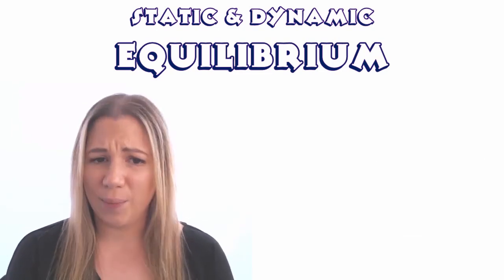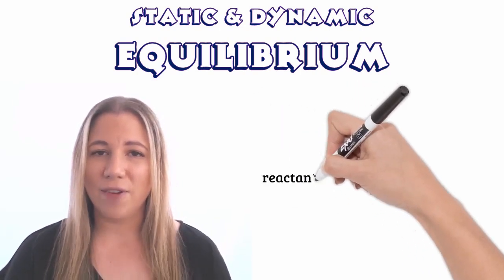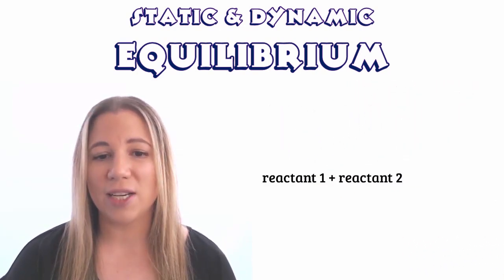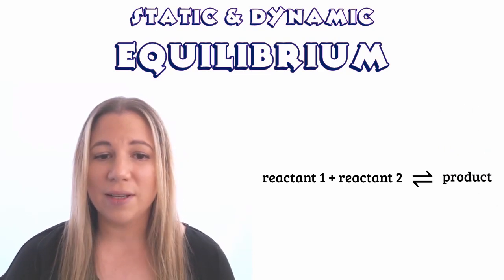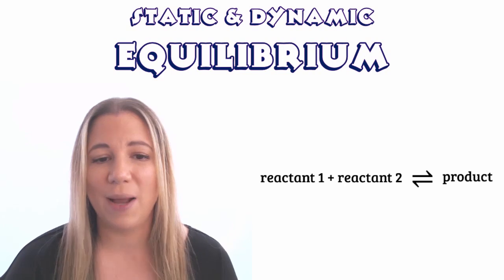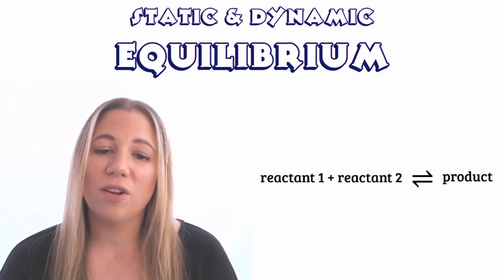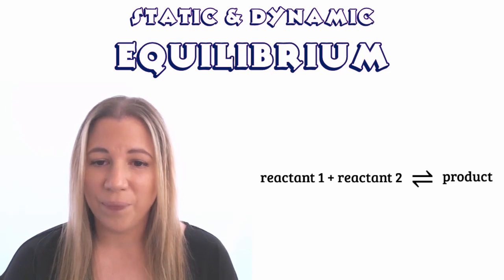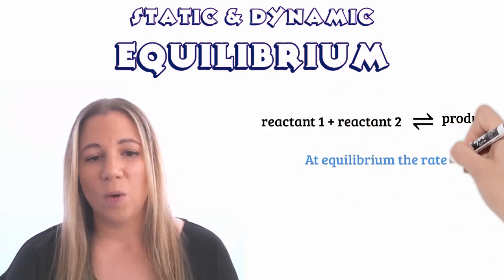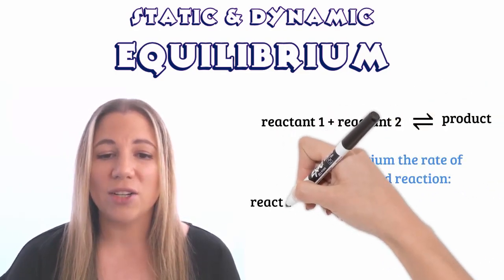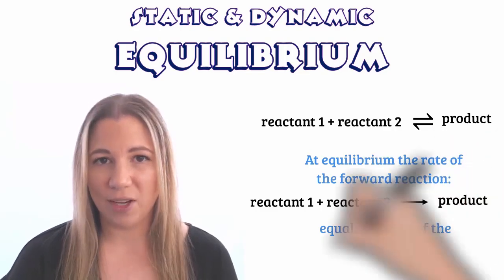So what is an equilibrium? Consider the following reaction. At first, the rate of the forward reaction is going to take place a lot faster than the reverse reaction, because at the beginning of the reaction, there are more reactant particles than there are product particles. Once a particular concentration of the products is reached, however, the reverse reaction will start to take place. Once the rate of the forward reaction equals the rate of the reverse reaction, we say that equilibrium has been established.